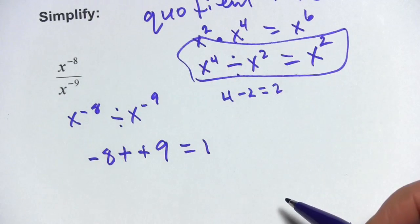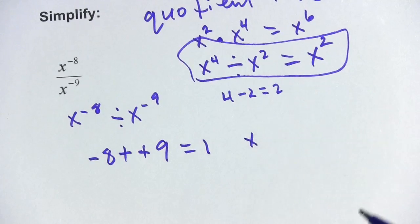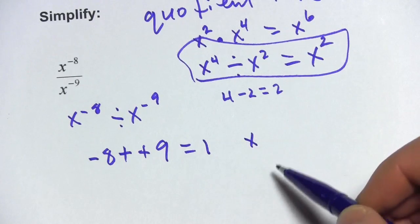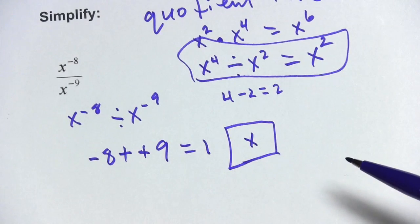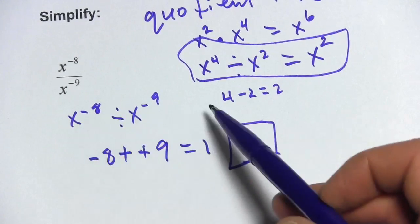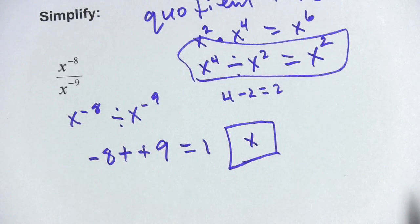So our answer here is going to be x to the 1 power. Well, and we don't even write the 1, we just leave it as it is. So the answer to this is just x. So we subtracted the exponents and we just got x to the first power or x.